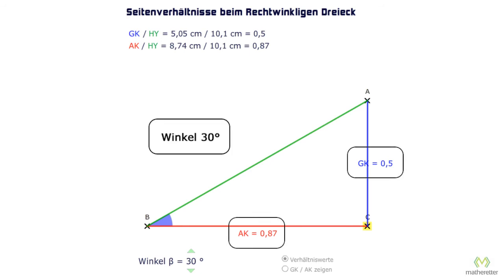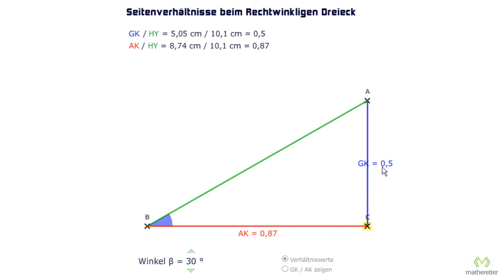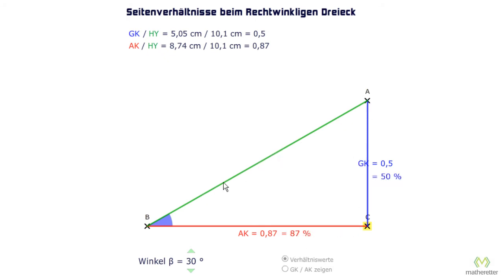These ratio values always apply at an angle of 30 degrees. As a hint: 0.5 is the same as 50 divided by 100, which is 50%. And 0.87 can also be written as 87%. So one can say: 50% of the hypotenuse is the length of the opposite, and 87% of the hypotenuse is the length of the adjacent.